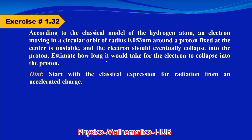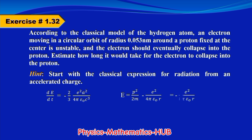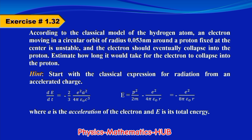Hint: Start with the classical expression for radiation from an accelerated charge — dE/dt, the rate of energy radiated, is equal to minus (2/3) e² a² divided by 4π ε₀ c³. The total energy E equals v²/2m minus e²/(4π ε₀ r), which simplifies to minus e²/(8π ε₀ r), where a is the acceleration of the electron and e is its total energy.